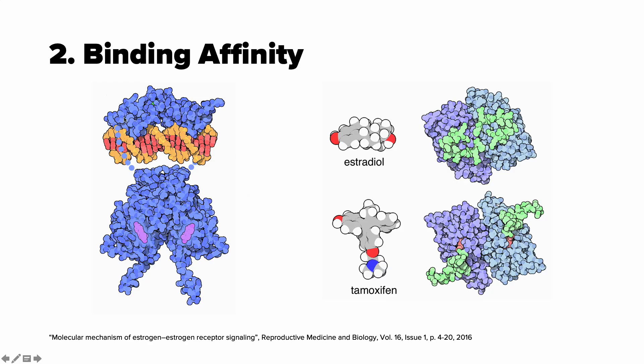To the left you can see the estrogen receptor bound to the DNA. And to the right you see the active center of this protein connected with two ligands, namely estradiol in green and tamoxifen.